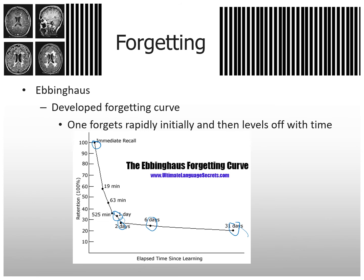The Ebbinghaus forgetting curve: you forget rapidly right away. Even after 19 minutes you've already forgotten 40% of what you just learned. After an hour, more than half. After a day, two-thirds. But after that, you're only losing a few percent the next day and even less after that.